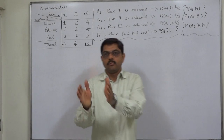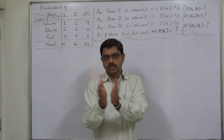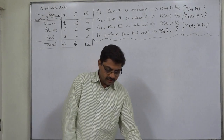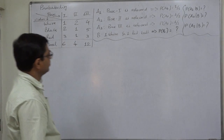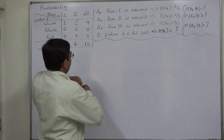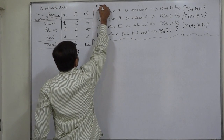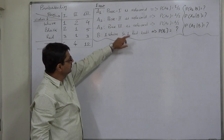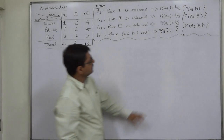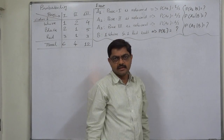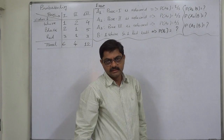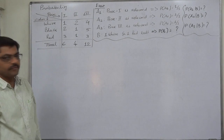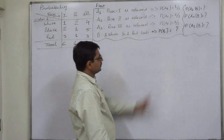This is possible as a joint event: box number one and particular balls, or box number two and particular balls, or box number three and particular balls. We are going to solve this using notation: A1 indicates box 1 is selected, A2 indicates box 2 is selected, A3 indicates box 3 is selected, and B means one white and one red ball is selected. Since there are three boxes, the probability of selecting any particular box is 1/3. So P(A1) = 1/3, P(A2) = 1/3, P(A3) = 1/3.